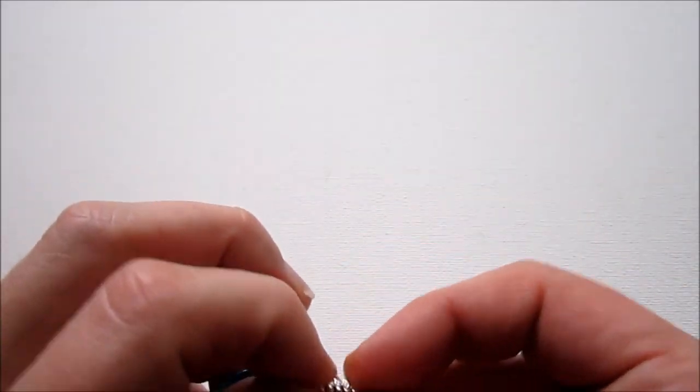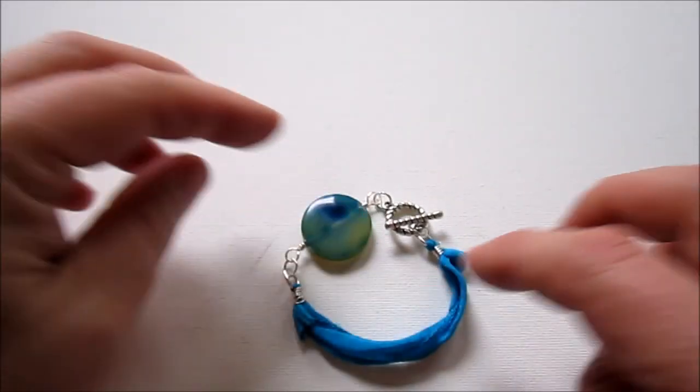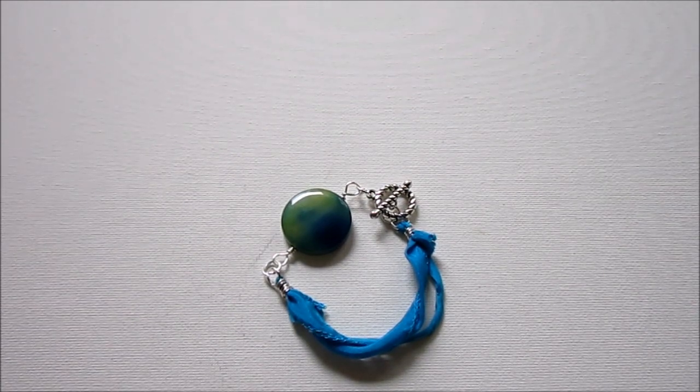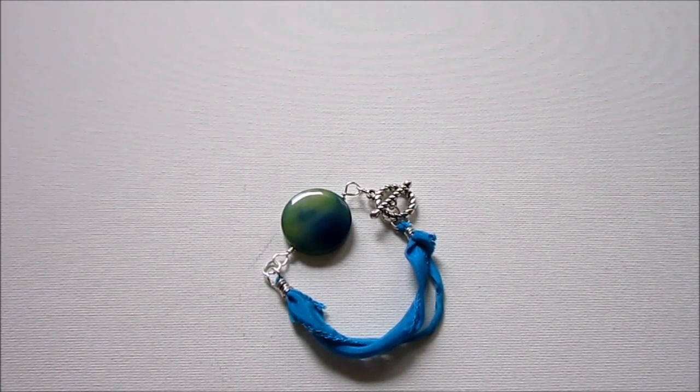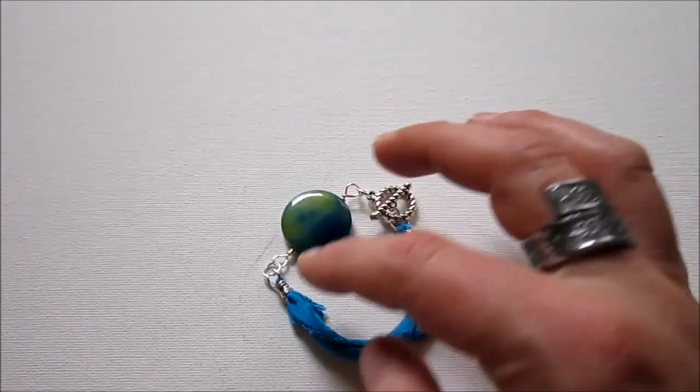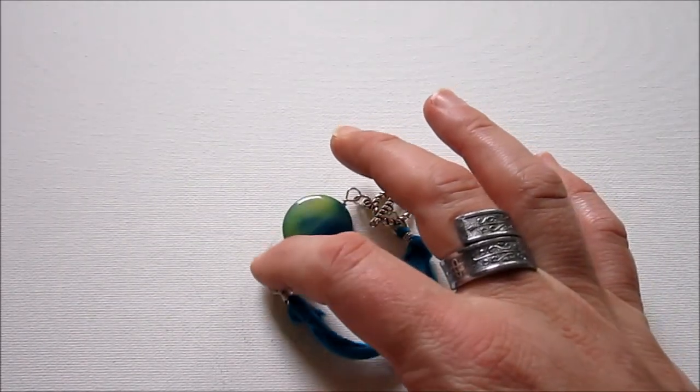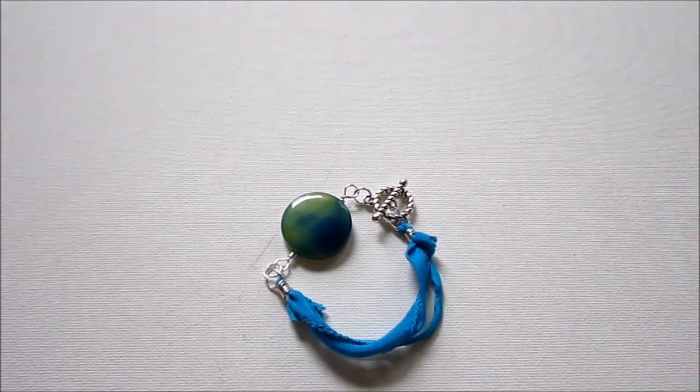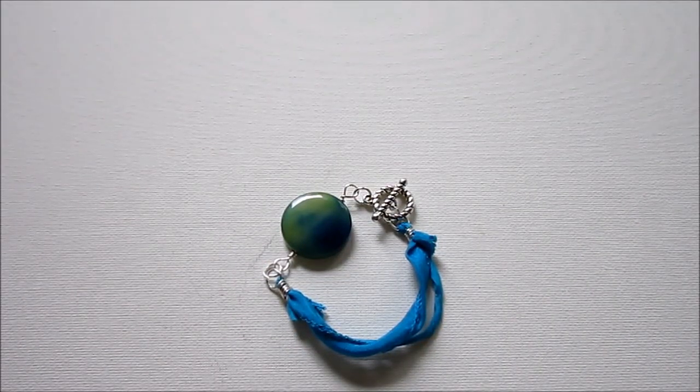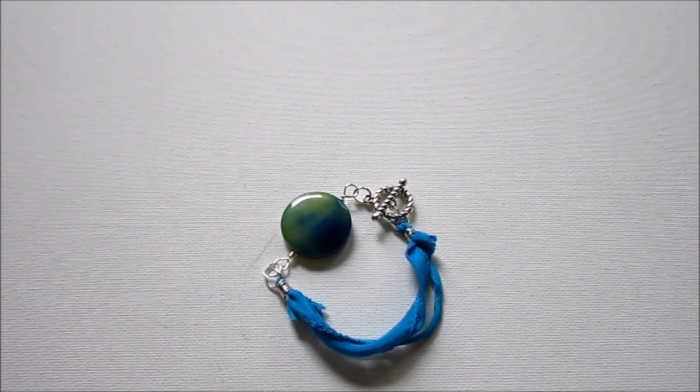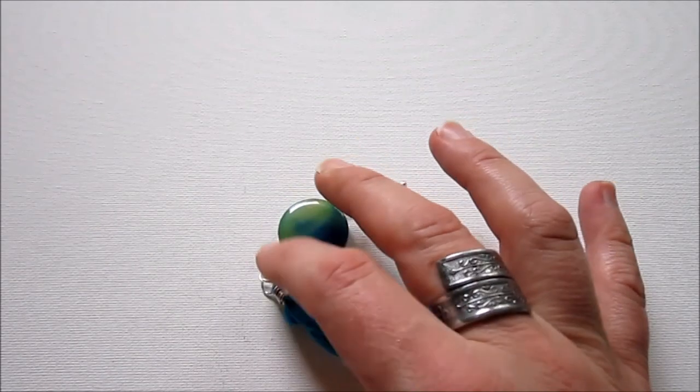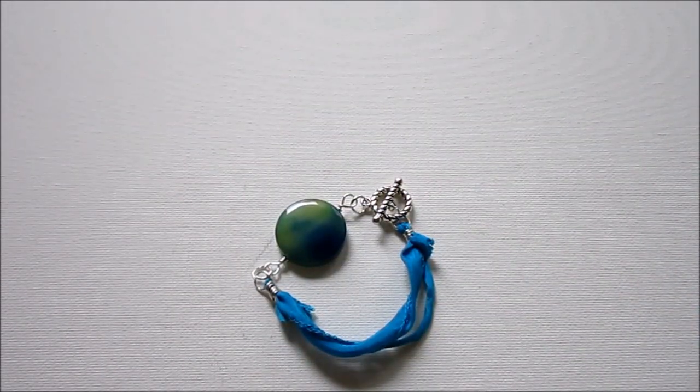So, if you try on your bracelet and you find out that you have made it too short, all you have to do is add some jump rings. So, you could add jump rings at any point where there are jump rings in every point, if you want. And to kind of cover that up, if you want, you could add some bead dangles to each side, something like that.